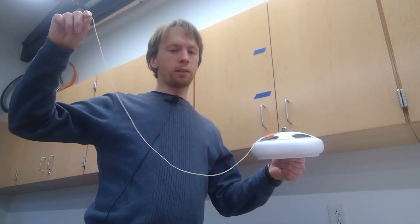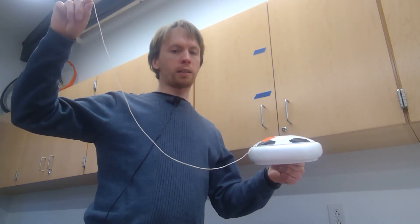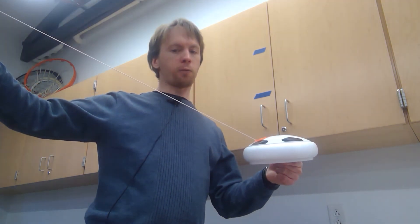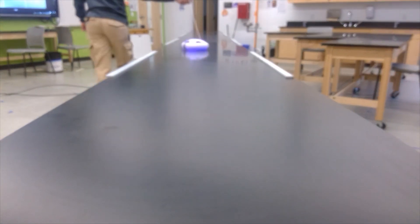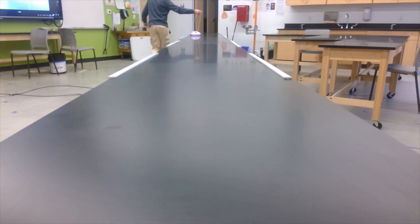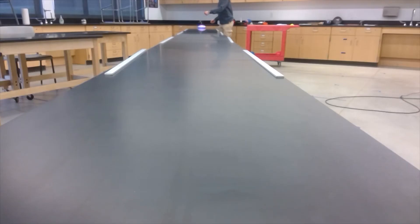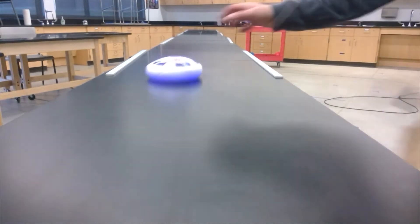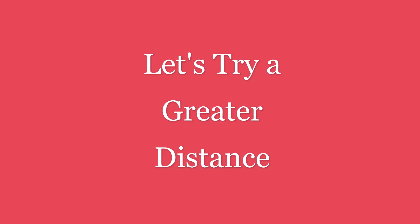If the string is not taut, then I'm not applying a force anymore — the string is just dangling and hanging there. A taut string shows that I'm applying a constant force.